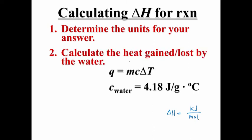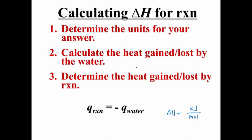Next, you calculate the heat that is gained or lost by the water. In calorimetry, water is almost always used as the receiver or the giver of the heat that is transferred. To calculate the heat gained or lost by the water, we'll use that equation again. Q equals M times C times delta T. And remember, C for water is always 4.18 joules per gram degree Celsius. Next, we find the heat gained or lost by the reaction.